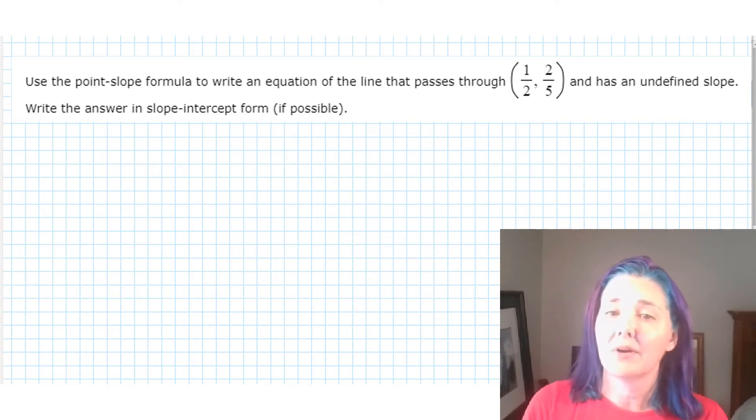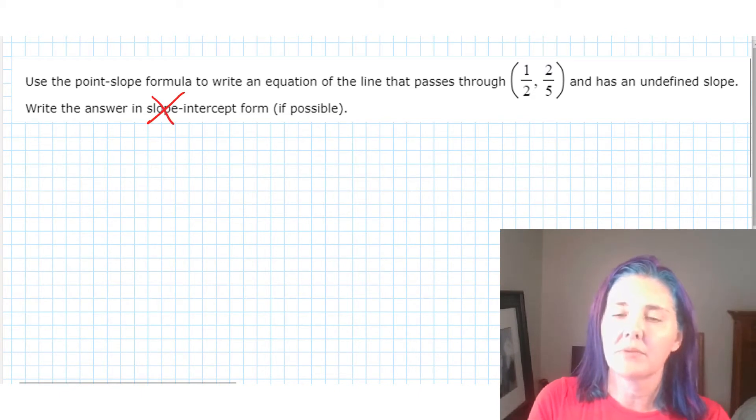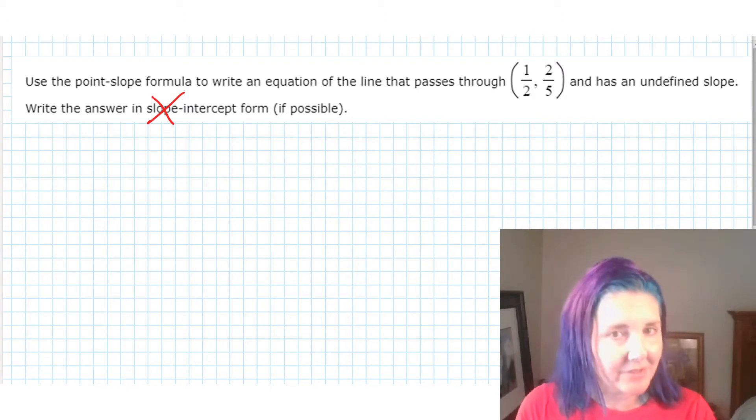Well, I can tell you right away that it's not going to be possible to write this in slope-intercept form because for slope-intercept form, you have to have the slope and our slope is undefined, which means that we can't write it as a number. So just ignore that part of the problem.